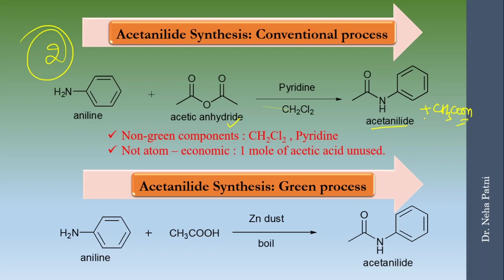This byproduct means atom economy is also not followed — one mole is wasted. In the green process, acetic anhydride is not used, so no acetate molecule is wasted. Instead, zinc dust is used as a catalyst and the reactants are simply boiled together. I have made a separate video on the green preparation of acetanilide showing how beautiful white crystals are obtained with higher yield using both processes — go check that out.